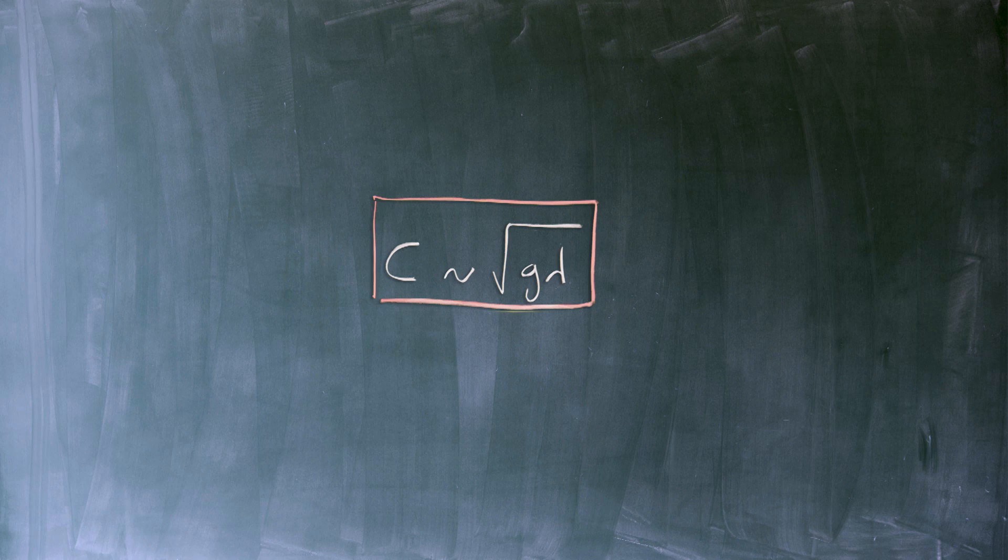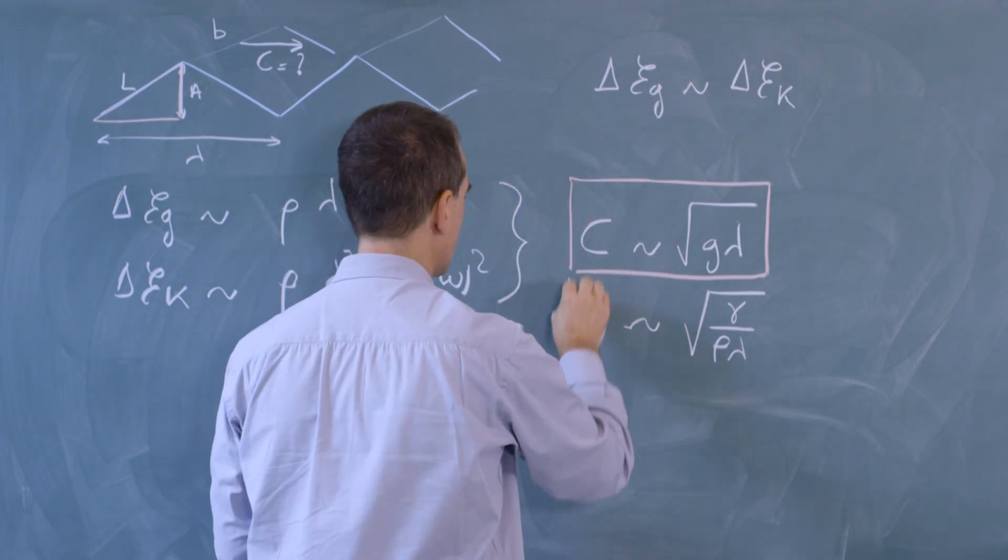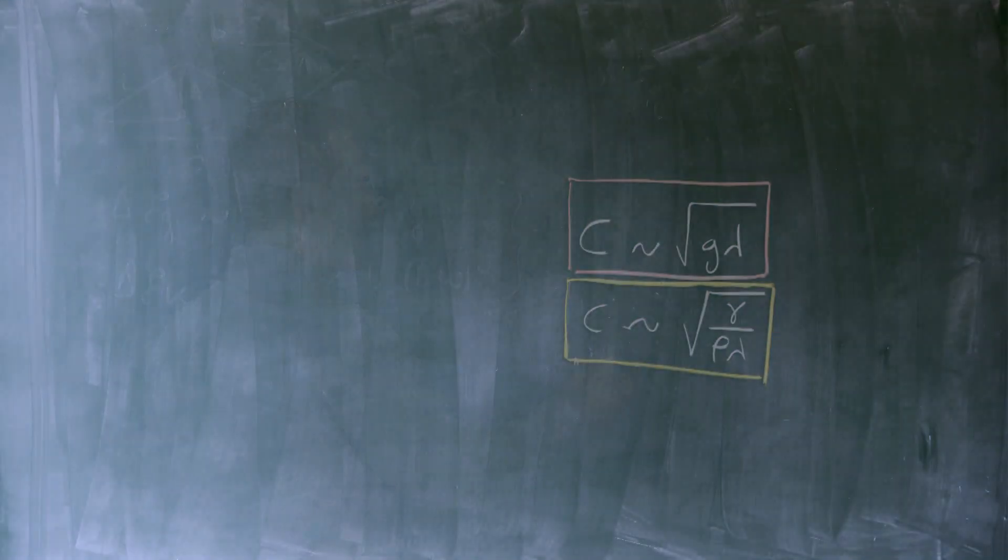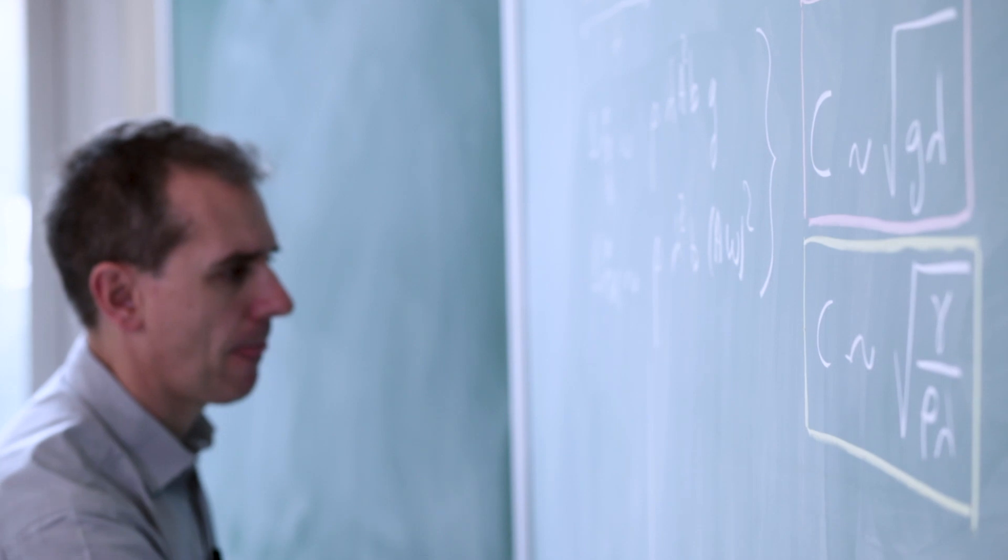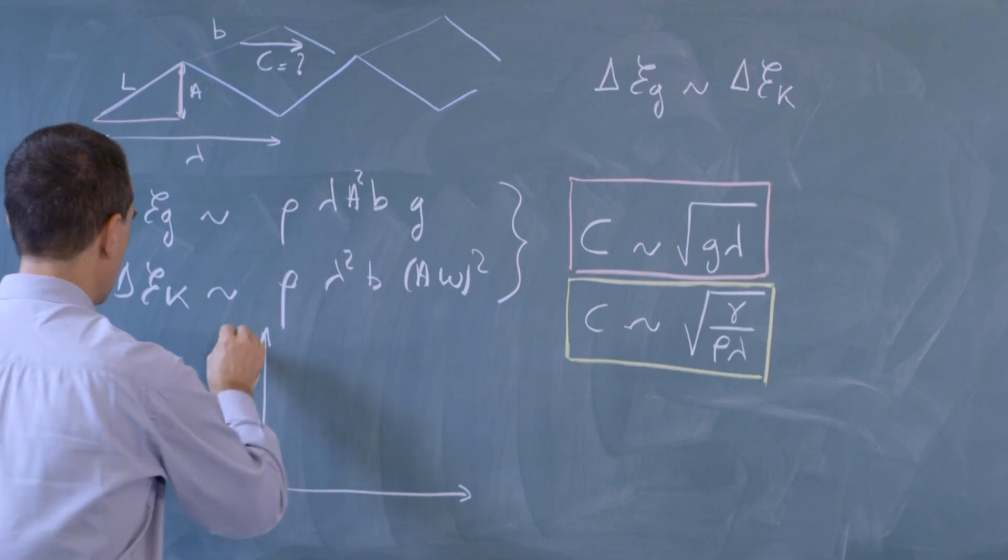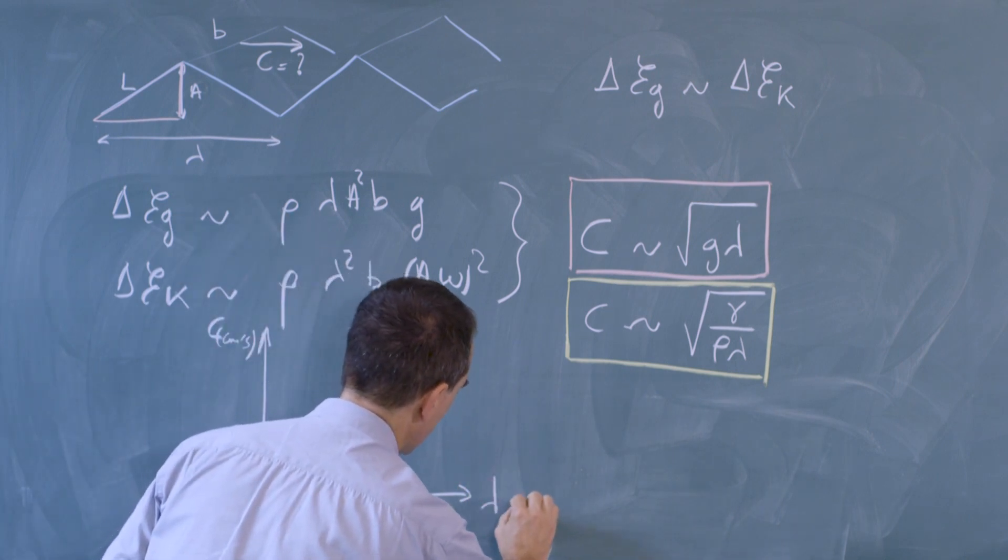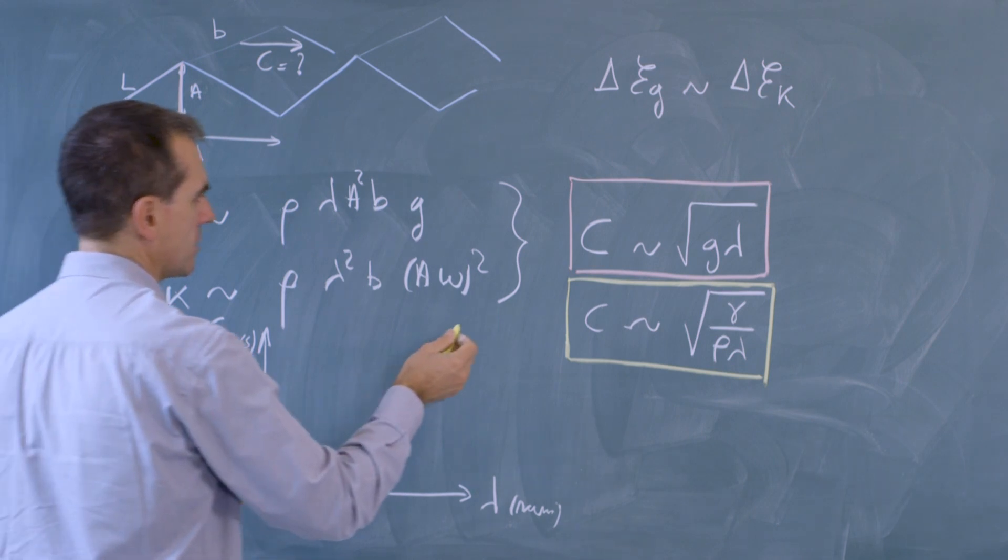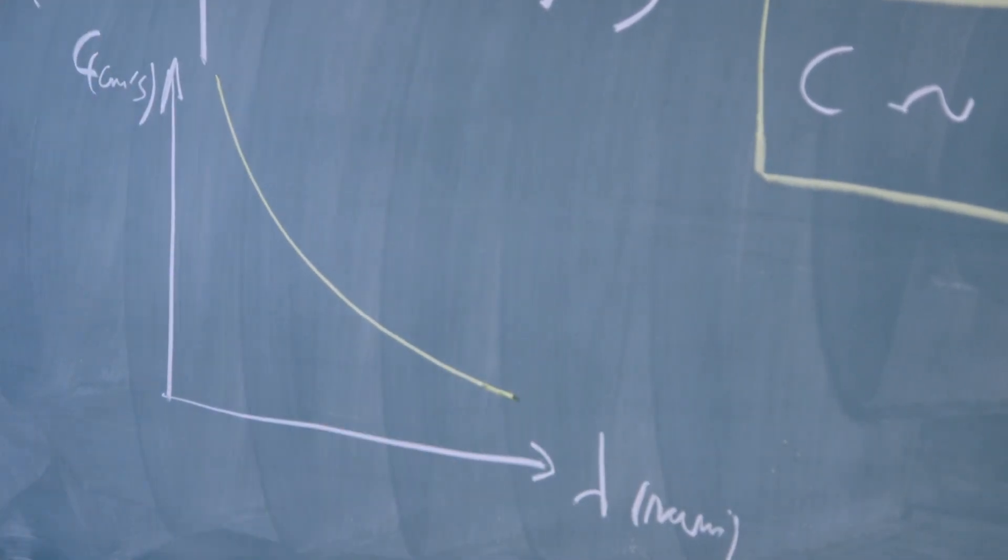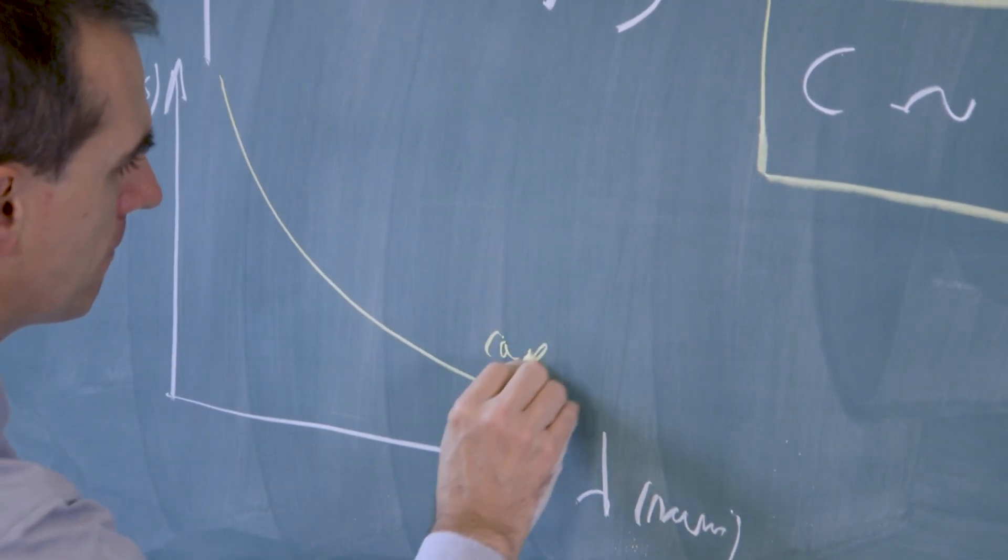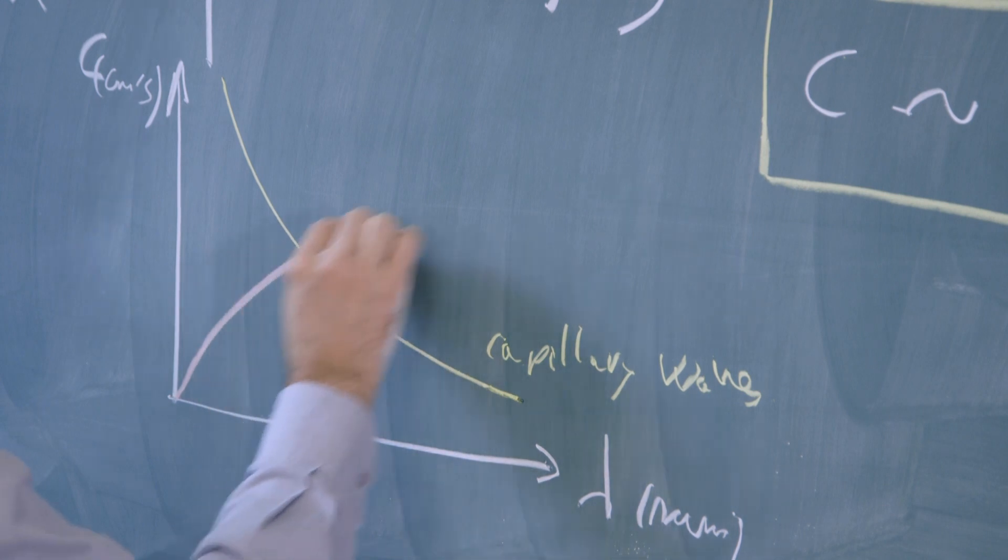And I recall that the one that we had for capillary waves was square root of gamma divided by rho lambda. So the dependency of the velocity of capillary waves and gravitational waves is different as far as their link to the wavelength is concerned. So this can be made clear on the following plot where we are going to represent the velocity of propagation of the wave in centimeters per second as a function of the wavelength in millimeters. The first relationship that we have obtained had to do with capillary waves. And this one tells us that the velocity goes like 1 over the square root of lambda. This is the yellow part, capillary waves. The second one is the pink one that we have obtained for gravitational waves. And it goes like square root of lambda.